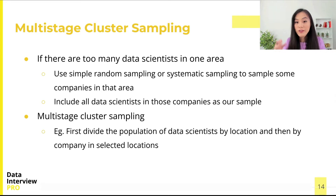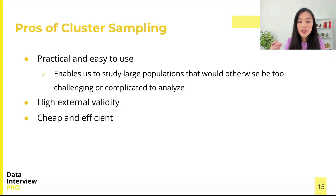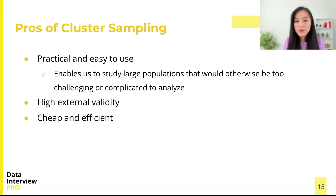Let's look at the pros and cons of cluster sampling. Cluster sampling is practical and relatively easy to use. This type of sampling process enables us to study large populations that would otherwise be too challenging or complicated to analyze. Cluster sampling has a high external validity, which means that the results can be generalized to the whole population. Cluster sampling is also cheap and efficient. In the data scientist example, it reduces expenses needed to cover large geographical populations — we only need to focus on one or a few areas.